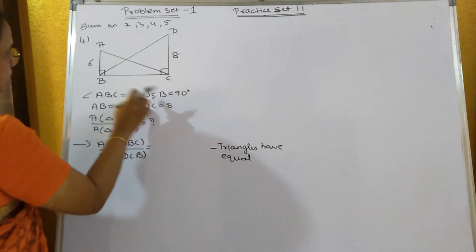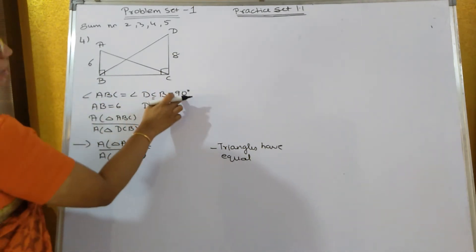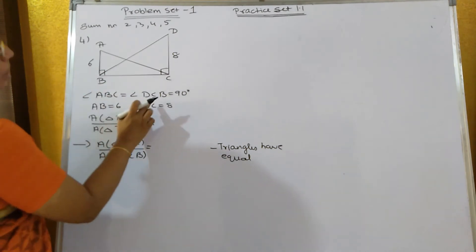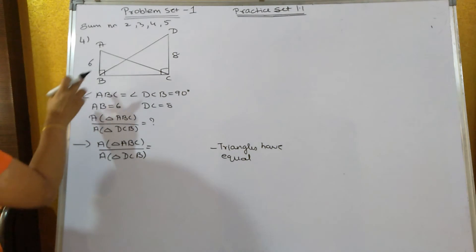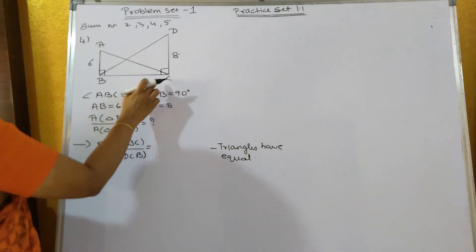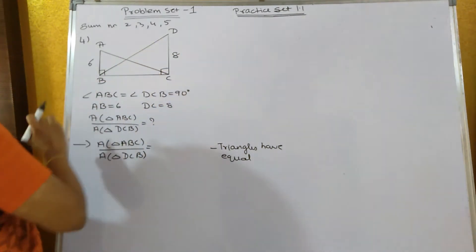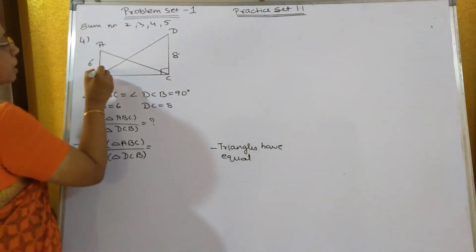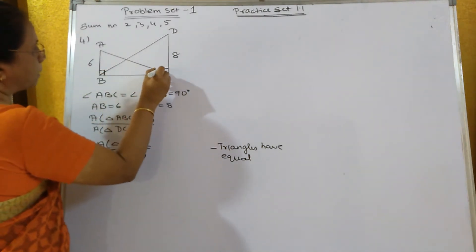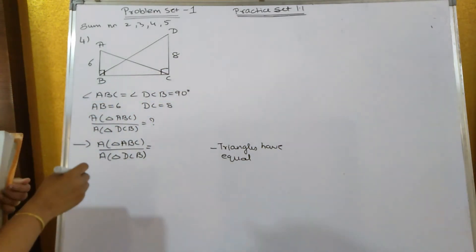So C is 90 degrees, which means this becomes the height, and this is also the height. Both are heights. You can see the heights now—AB value is 6 and DC value is 8.